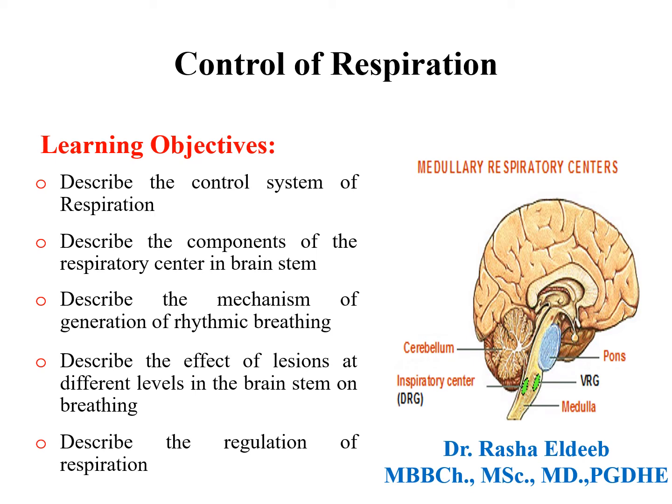This is the first session that describes the control of respiration. The learning objectives are to describe the control system of respiration, describe the components of the respiratory center in brainstem, describe the mechanism of generation of rhythmic breathing, describe the effect of lesion at different levels in the brainstem on breathing, and describe the regulation of respiration.